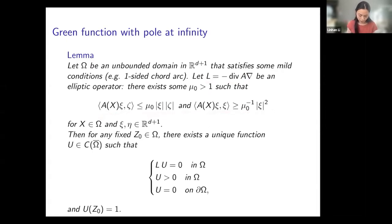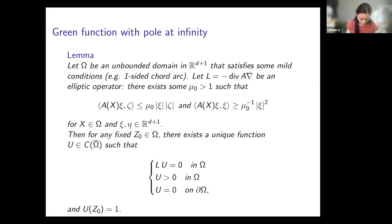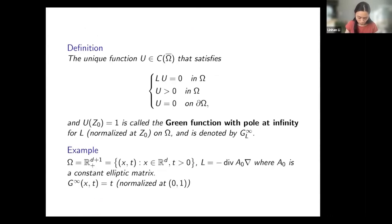For any fixed point z0 in the domain omega, there exists a unique function u that is continuous all the way to the boundary, solves Lu equals zero in omega, is positive in the domain, vanishes on the boundary, and equals one at the point z0. We define this unique function u to be the Green function with pole at infinity for the operator L, normalized at z0 on the domain omega.